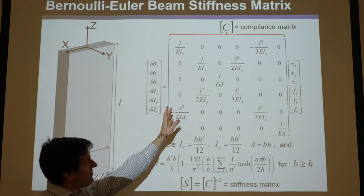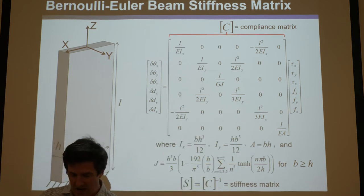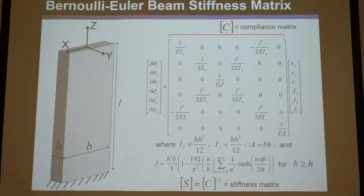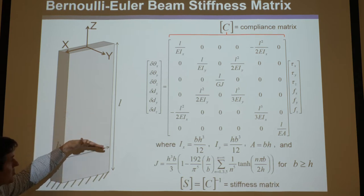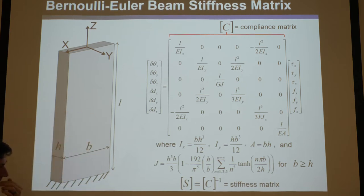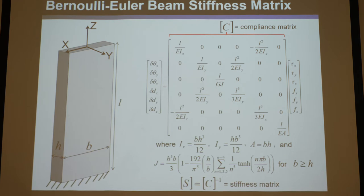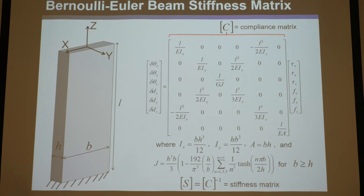There are other variations called Timoshenko equations that are similar but have additional terms. They take into account short beams that are relatively short compared to their B and H, and can even handle extreme ratios between H and B. They do much better, and they're still for linear scenarios — for infinitesimally small forces and infinitesimally small displacements. They capture the original instantaneous stiffness and behavior, and are much more accurate than the simplified Euler equations for longer beams.